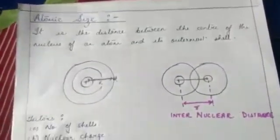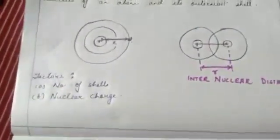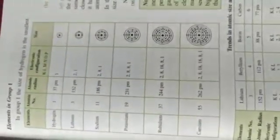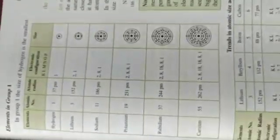The factors that influence atomic size are: number of shells and nuclear charge. Taking elements of group number one, which starts from hydrogen and ends at caesium — as we move down the group, the number of shells keeps on increasing. As the number of shells increases, the distance from the nucleus to the outermost shell increases, and as a result the atomic size keeps on increasing as we move down a group.